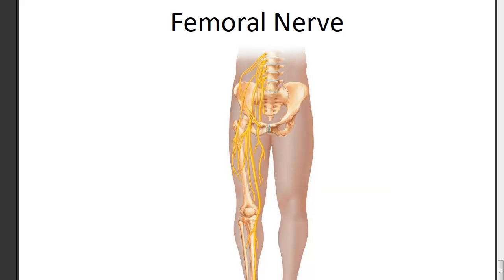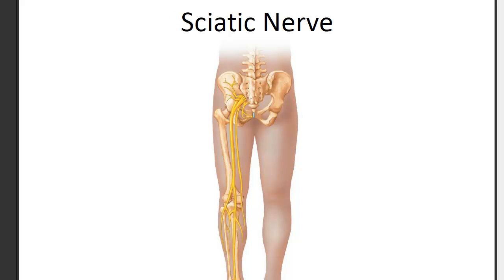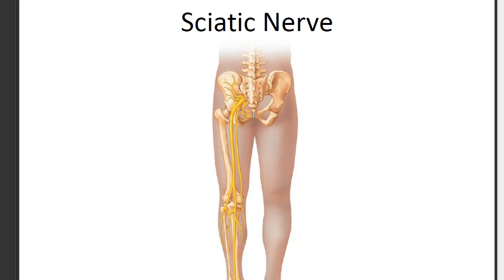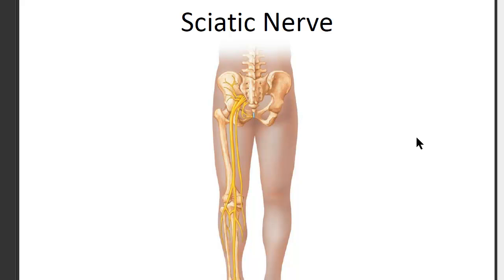The large nerve coming off the sacral plexus, in the lowermost aspect of the spinal cord, is the sciatic nerve. We're looking at the back side of the body here, where the sacrum is visible, and this nerve goes down the back of the leg. Both start with an S — the sacral plexus gives rise to the sciatic nerve. In your diagram on page 37, the sacral plexus has dashed lines indicating it exits through the back side, serving the back of the leg.